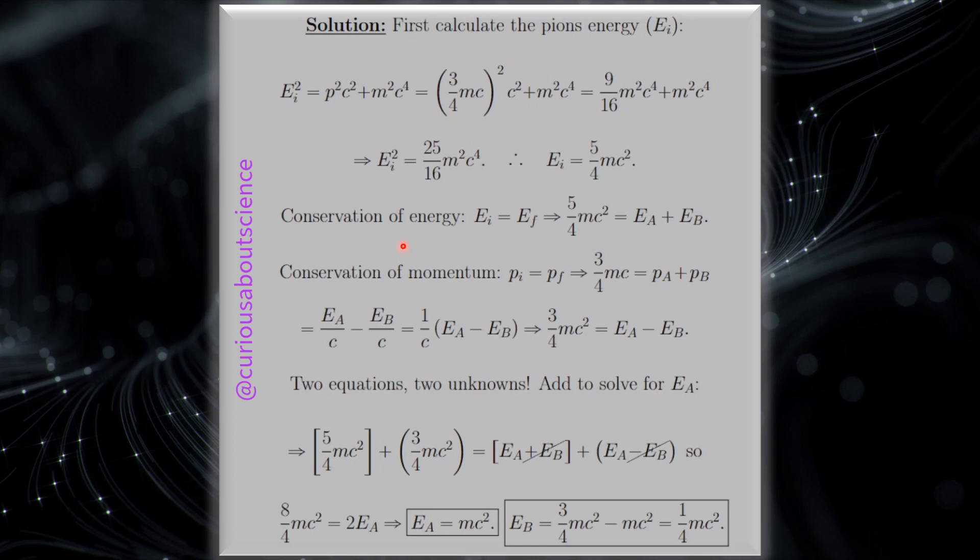But we can use conservation of momentum to help us here. So PI and PF have to equal the same. That's conservation. We were told we had a momentum of 3/4 MC and PA and PB here. The thing about the PB and the PA is that we were told that one of them went in the original direction. One of them went in the opposite direction.